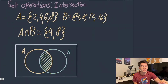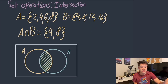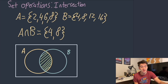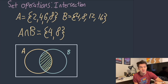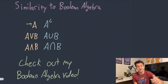The next operation we're going to talk about is intersection. Intersection is asking what elements are in both sets. With our same two sets A and B from before, 4 and 8 are the only elements that appear in both sets. We can label that exactly as the intersection in our Venn diagram as a way to visualize it.